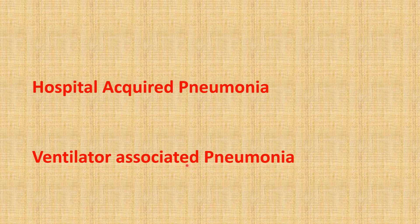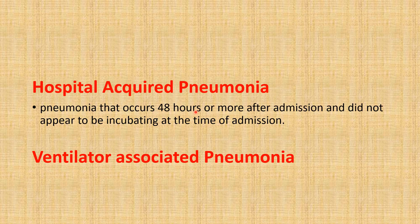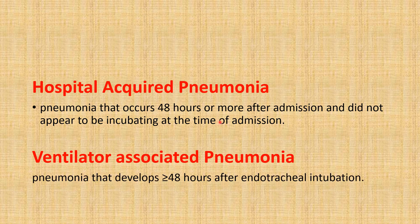Before knowing how to diagnose ventilator-associated pneumonia, you need to know two terms: hospital-acquired pneumonia and ventilator-associated pneumonia. Hospital-acquired pneumonia is a pneumonia that occurs after 48 hours or more and did not appear to be incubating at the time of admission. Ventilator-associated pneumonia is a hospital-acquired pneumonia that develops more than or equal to 48 hours after endotracheal intubation.